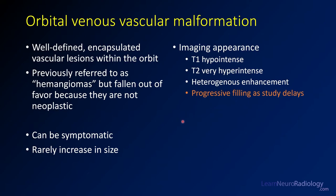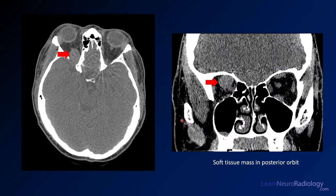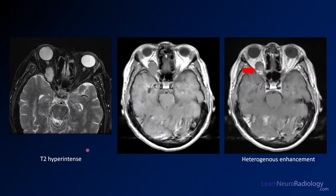On our CT, we have a mass in the right orbital apex — kind of up near the top of the orbit — so we've got a soft tissue mass there. You want to do an MRI to characterize it a little bit better.